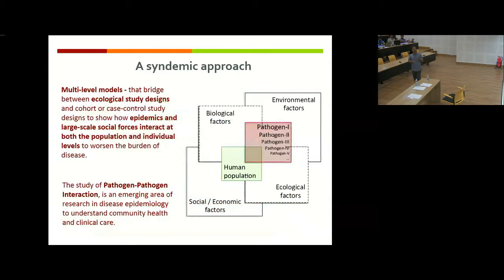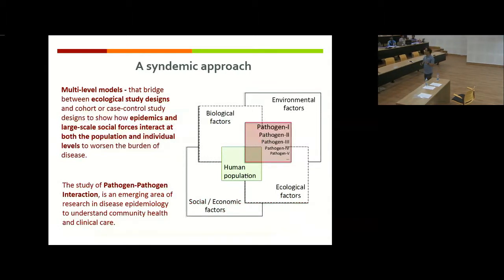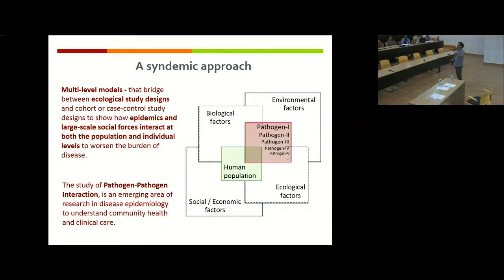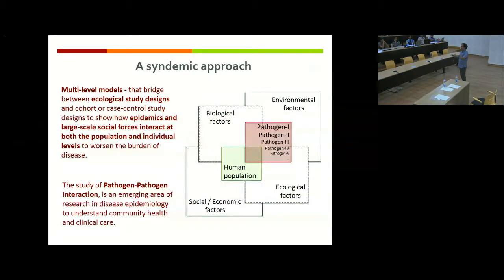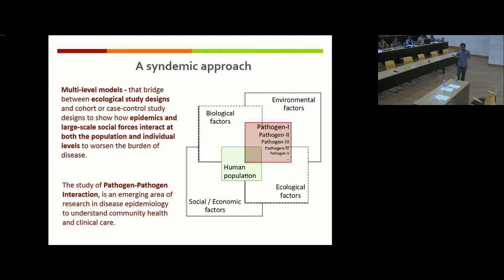To understand multiple co-occurring epidemics and how they interact at population and individual levels under large social forces — economic, demographic, and social conditions — we need an integrated multi-level modeling approach that can bridge ecological studies, epidemiological observations, and large social factors. The study of pathogen–pathogen interaction is a new emerging area of research in disease epidemiology for understanding community health and social care.